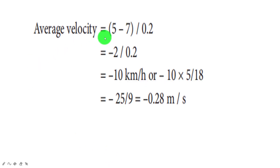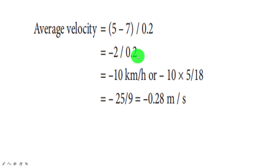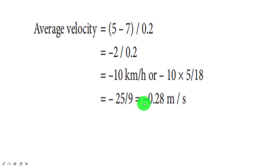Average velocity equals (5 minus 7) divided by 0.2, that is minus 2 by 0.2, equals minus 10 km/hr. Converting to m/s by multiplying by 5/18 gives minus 0.28 m/s. The minus sign indicates the car is moving in the opposite direction.